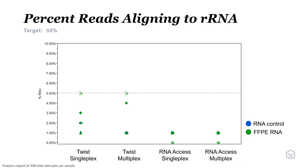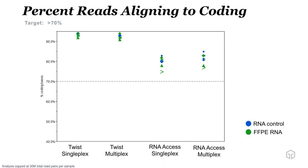The next metric was percent of reads aligning to ribosomal RNA, where we wanted less than 5%. All samples were able to meet that metric — the FFPEs are right at that cutoff but were less than or equal to 5%. RNA Access was slightly better, under 2% for all samples, while TWIST samples were under 5%, with no significant difference between multiplex or singleplex capture. For percent of reads aligning to coding, our target was greater than 70%. TWIST singleplex and multiplex have a very high percent aligning to coding — greater than 90% for all samples. RNA Access is slightly lower at about 80%. One thing to note is that RNA Access has a slightly higher percent of reads aligning to UTRs and intergenic regions than TWIST.